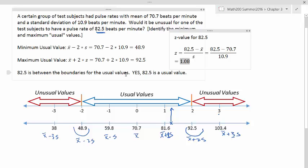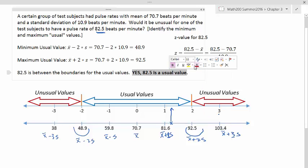Okay. So in either case, our conclusion is still the same. This is, in fact, the usual value. Using the z-score, we found that 82.5 has a z-score of 1.08, which is less than 2. Okay. So I hope this helps.